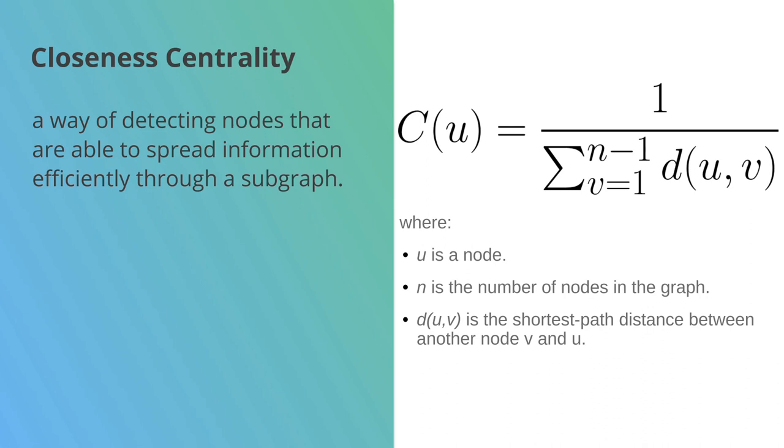What we get is what we call the average farness of a node, where a farness of one would mean that you can reach every node with one hop. There's a direct link from you to every node, and then a lower number would mean that you're much further away. So the higher numbers are better here.